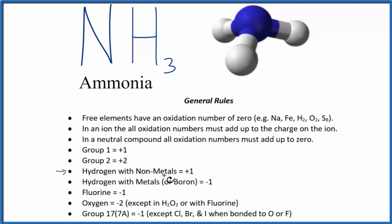So we'll look down our list here and can see that hydrogen when it's bonded to a nonmetal, and nitrogen is a nonmetal, is always plus one. So each of the hydrogens is going to be plus one.